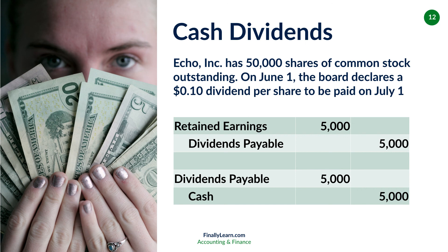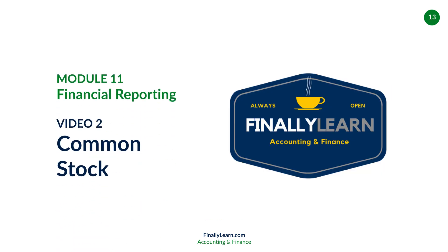Dividends payable is a liability for a month. We'll get rid of it on July 1st when we actually issue the cash: dividends payable $5,000, credit cash $5,000. The net effect is retained earnings goes down, equity goes down, and cash goes down.